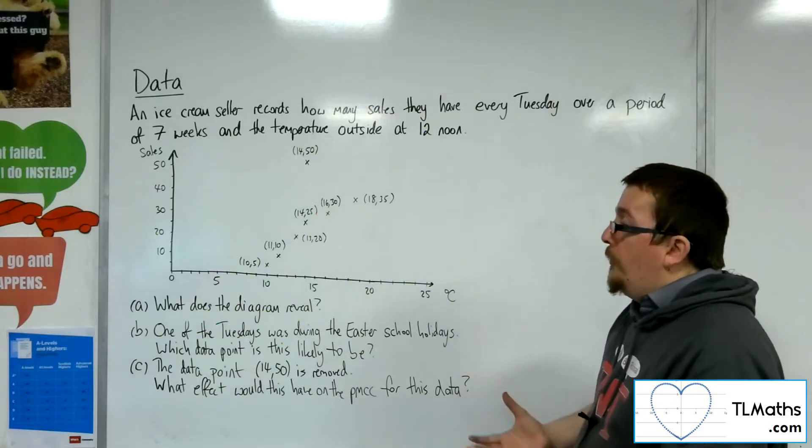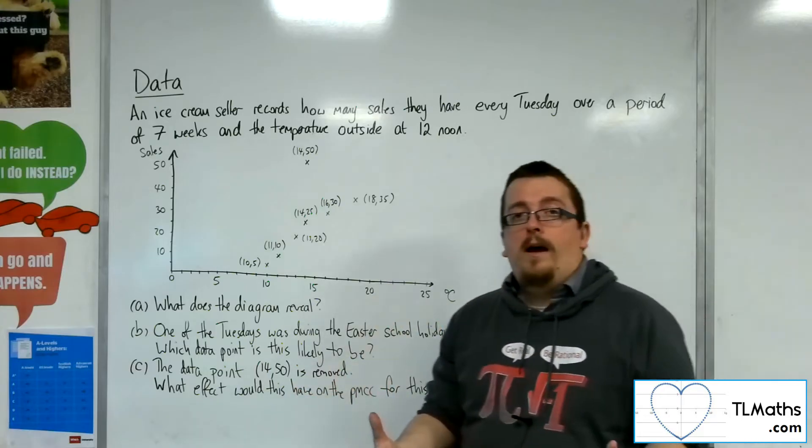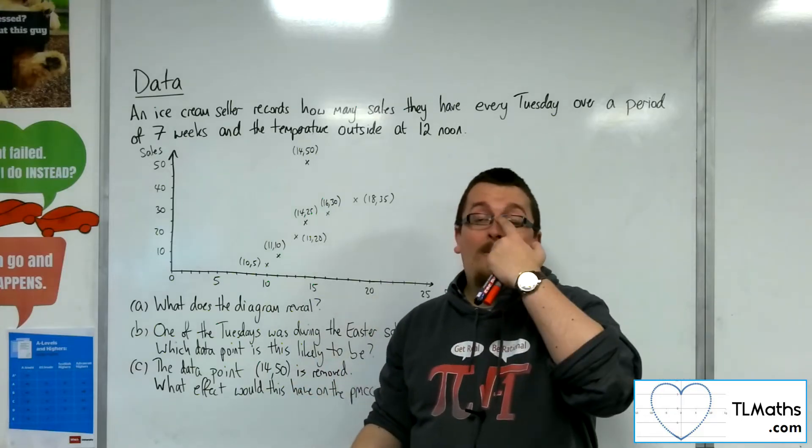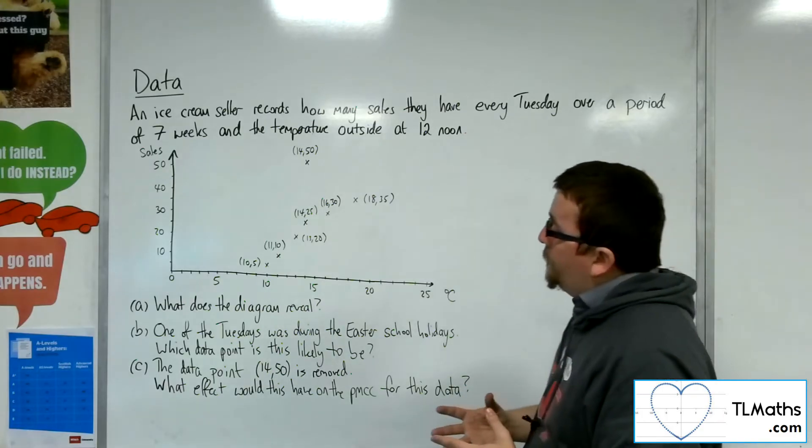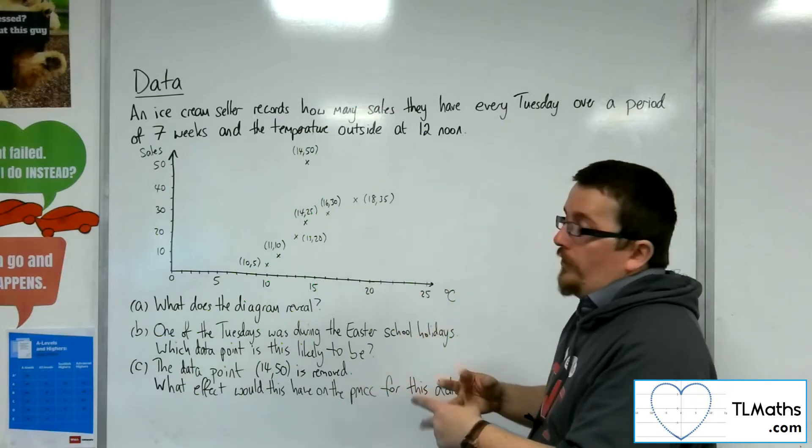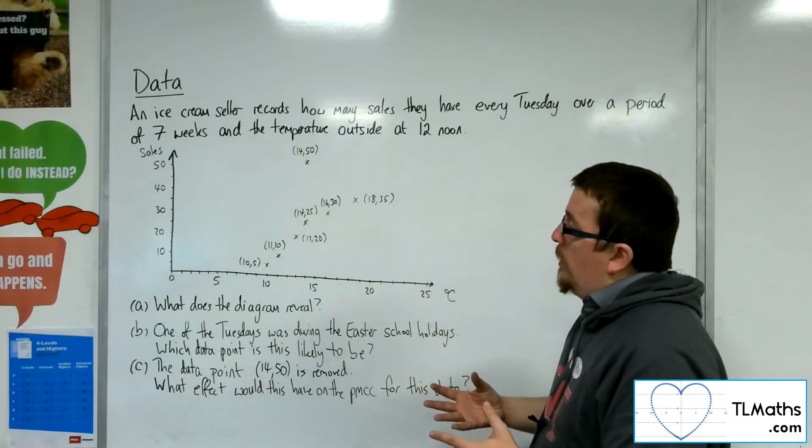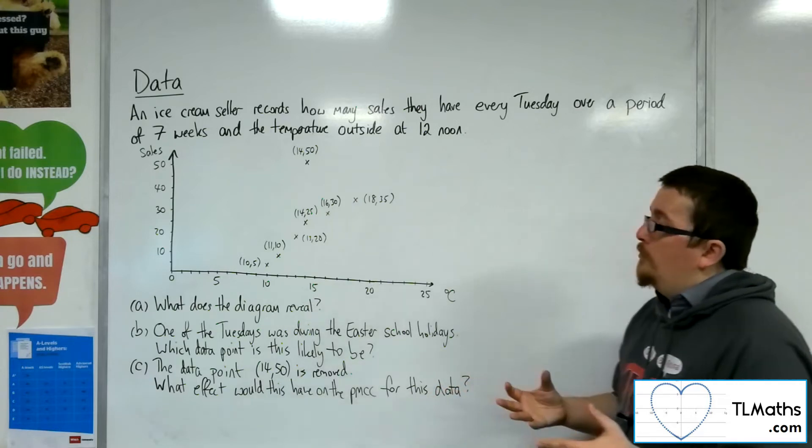So what you could do, because you've got the exact data there, you could work out an outlier, work out whether there is an outlier, so that you could do your calculation either using the quartiles or using the mean and standard deviation. I would probably go with the mean and standard deviation if you're using the temperatures.